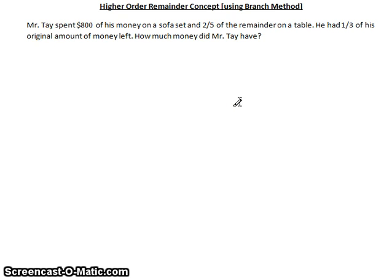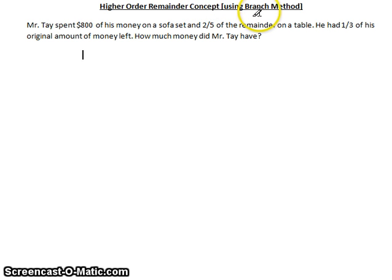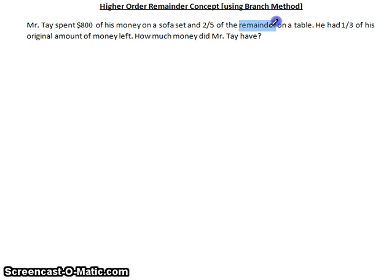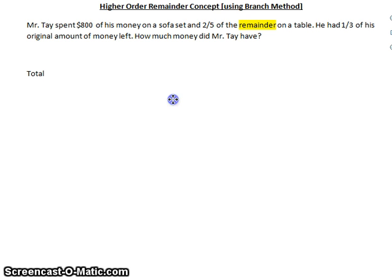Welcome to another tutorial session on the remainder concept. In this we are doing the higher order remainder concept using the branch method. Mr. Tay spent $800 of his money on a sofa set and two-fifths of the remainder on a table. The word 'remainder' gives us a very good clue that we are going to use the remainder concept. As with all remainder concept questions, we begin with a total and we start to branch off.